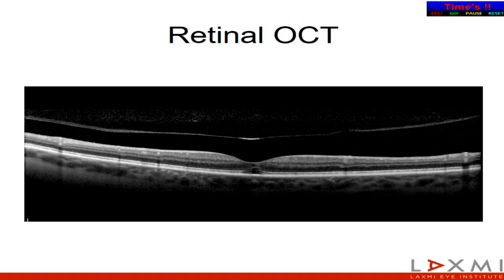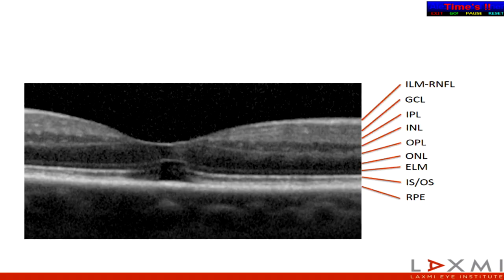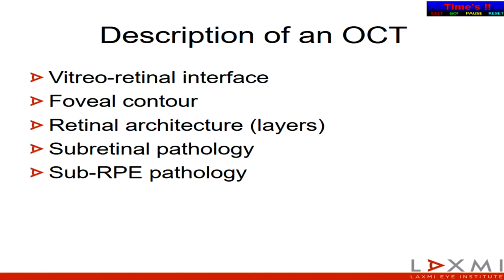Looking at the retinal OCT, the important things to know are the various layers which spectral domain OCT can show — starting from the internal limiting membrane or RNFL going right up to the RPE. Beyond that, the various layers of the choroid and even into the sclera can be imaged. When provided an OCT in examination, go methodically: describe the vitreoretinal interface, the foveal contour, the retinal architecture, any intra-retinal pathology, any sub-retinal pathology, and any sub-RPE pathology.